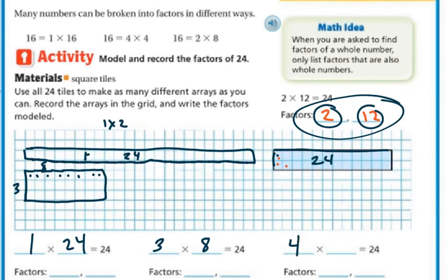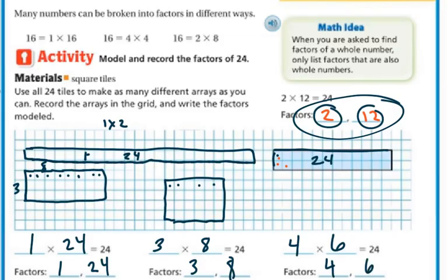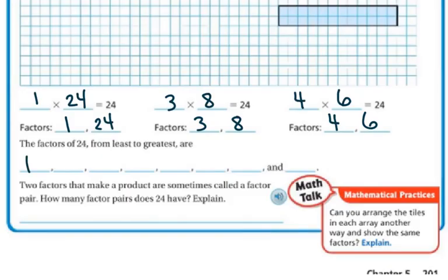So now let's try 4 and see if 4 goes into it. I know that 4 times 6 is 24, so 4 rows going across 6 tiles. If I were to count these up, I would have 24 squares. So 4 times 6 is also 24. The factors here are 1 and 24, 3 and 8, and 4 and 6.